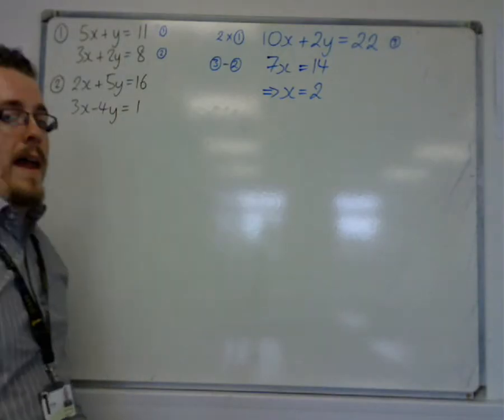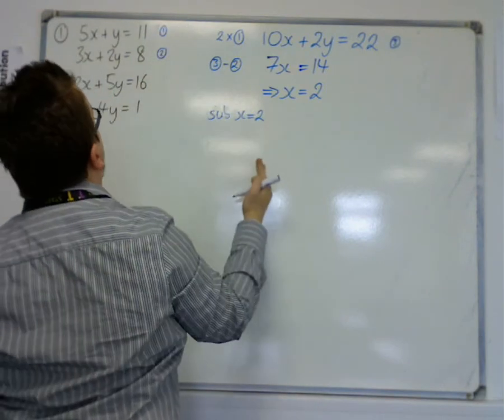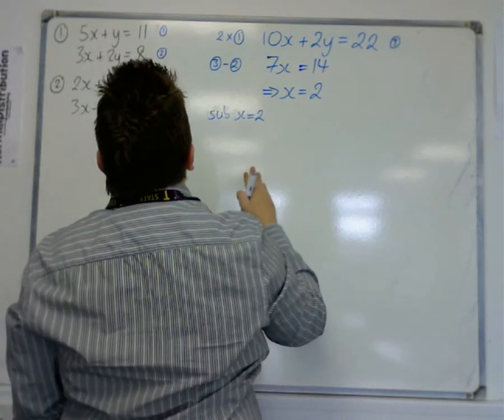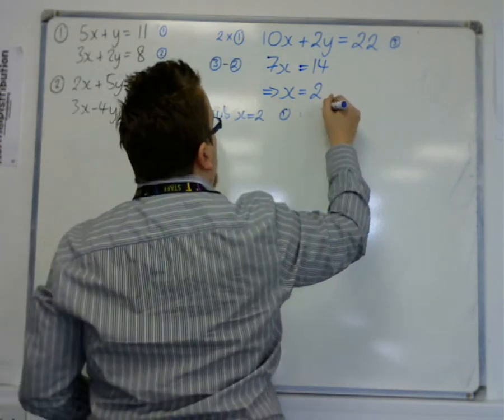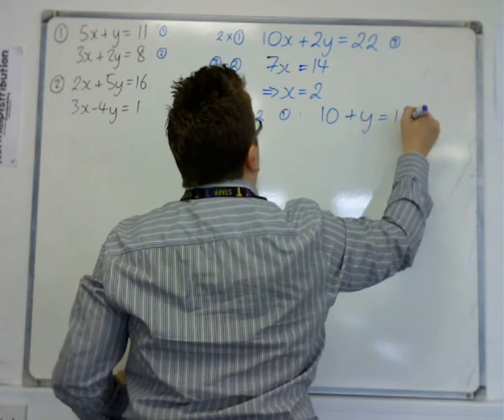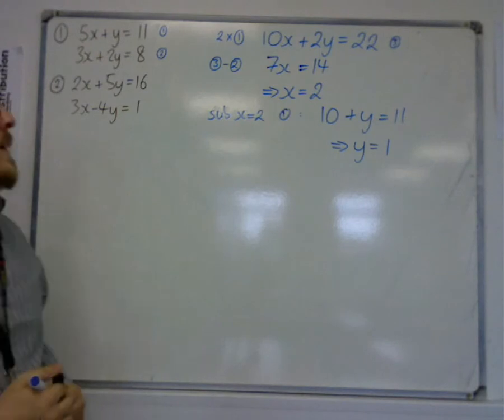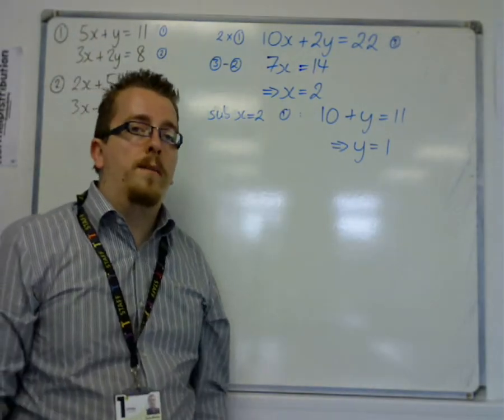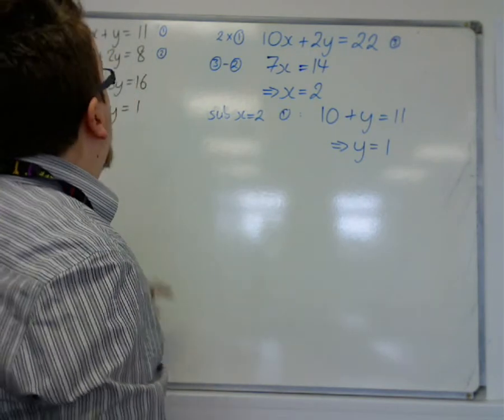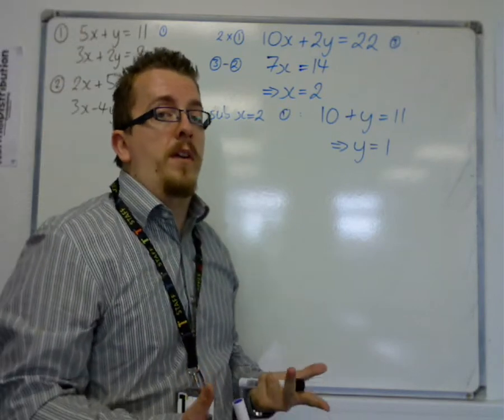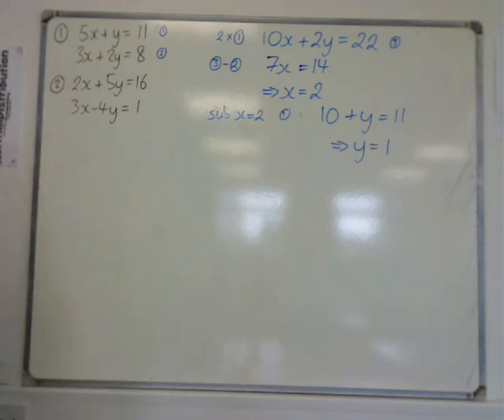So when I've got x, I can then sub x equals 2 into one of the two original equations. The easiest one would probably be number 1. So I get 5 lots of 2 is 10, plus y is 11. So y must be 1. So the solution to these simultaneous equations is x is 2 and y is 1. And if you want to know where the graphical part of this would go, that would mean that these two lines intersect one another at the coordinates 2, 1. So that's the next real step to that.